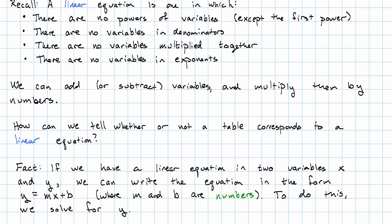If we have a linear equation in two variables, say x and y, we can write the equation in the form y equals a number times x plus another number. All we have to do in order to do that is to solve for y.